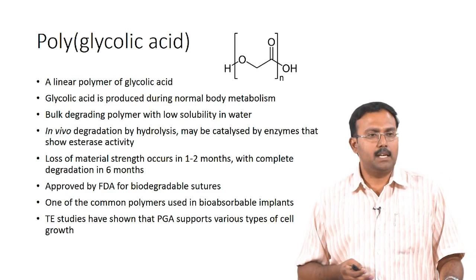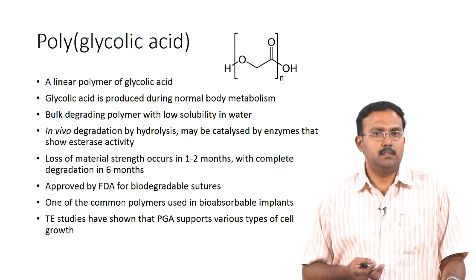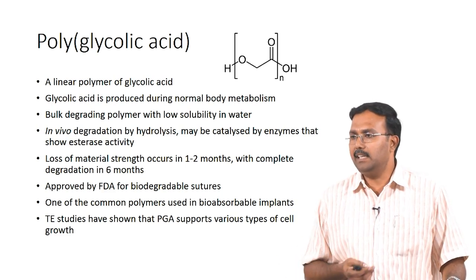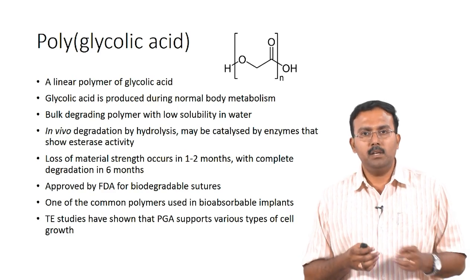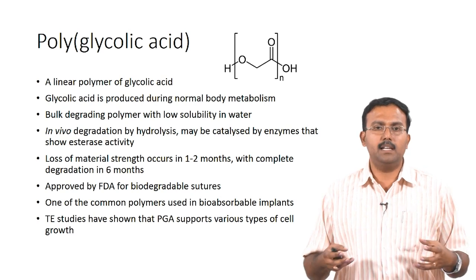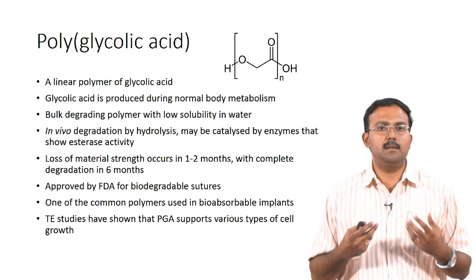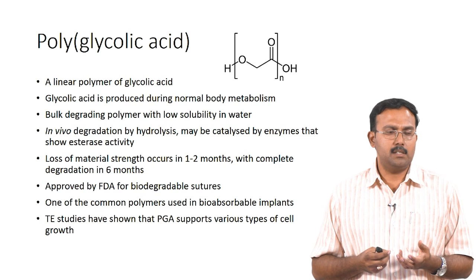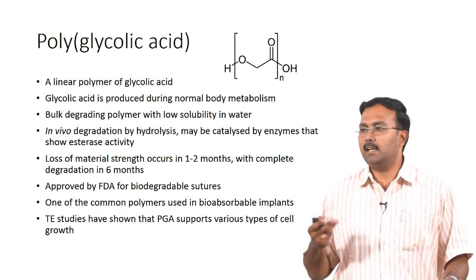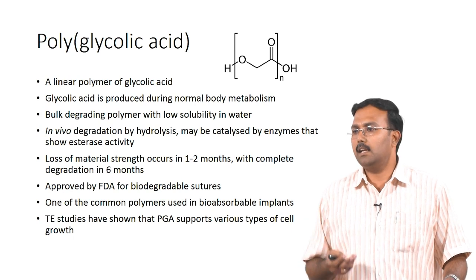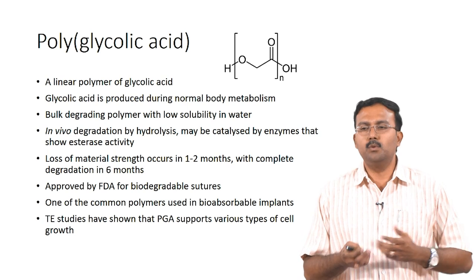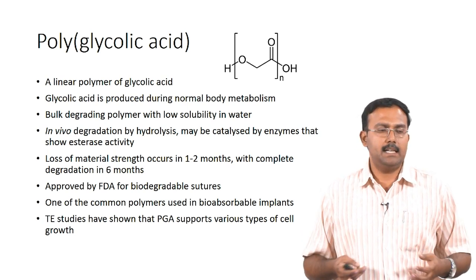This is PGA — polyglycolic acid — a linear polymer of glycolic acid. Glycolic acid is actually produced in your body during normal metabolism, which means the degradation products of polyglycolic acid are not going to have any toxic effect. However, this material goes through bulk degradation, not just surface degradation. In vivo degradation happens only through hydrolysis, and this process can also be catalyzed by molecules which have esterase activity — enzymes with esterase activity can rapidly hydrolyze PGA.